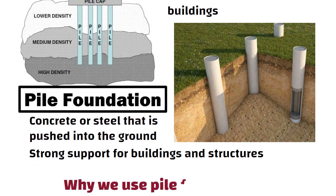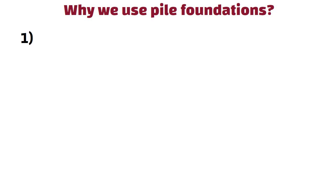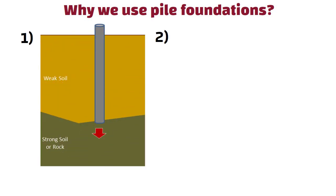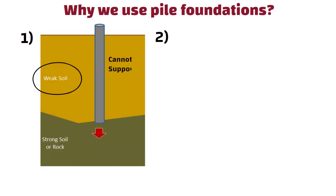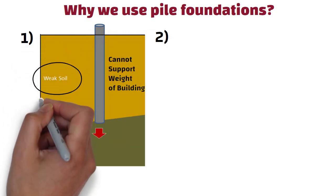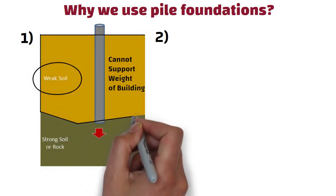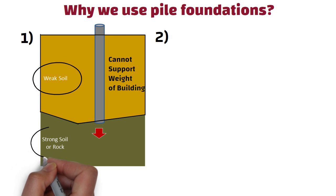Do you know why we use pile foundations? We use them in two situations. The first is when there is a layer of weak soil near the surface that cannot support the weight of the building. So the loads of the building have to bypass this layer and be transferred to the layer of stronger soil or rock that is below the weak layer.